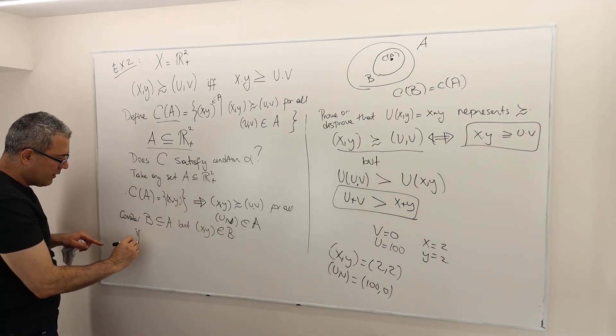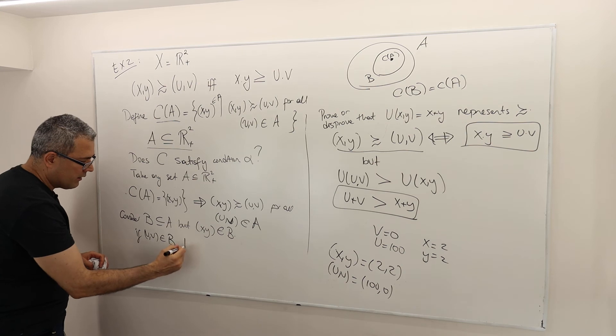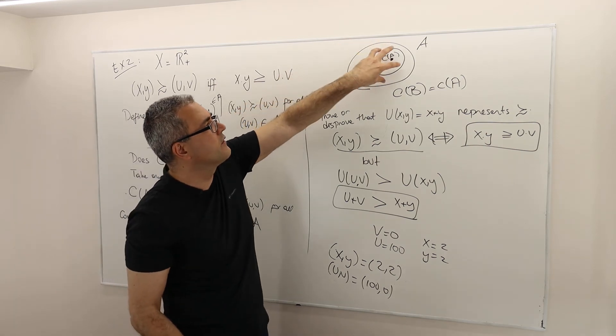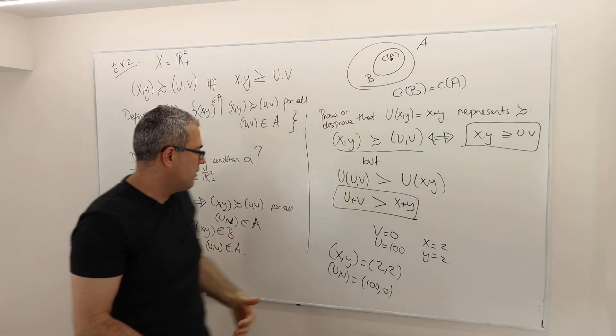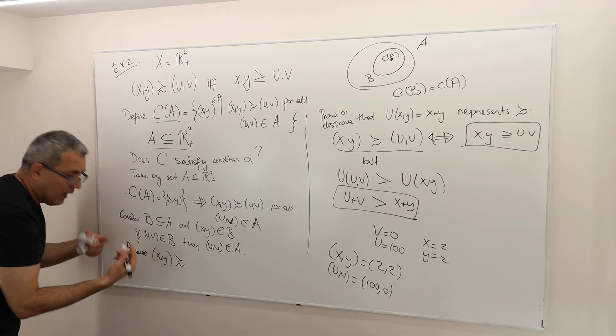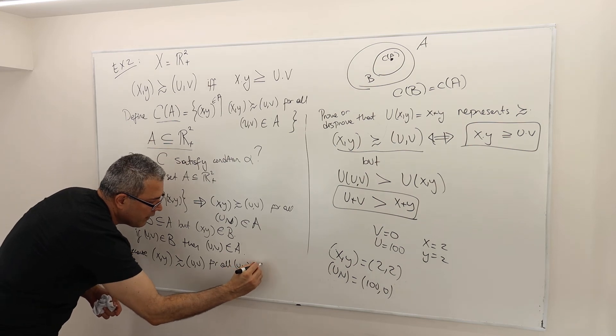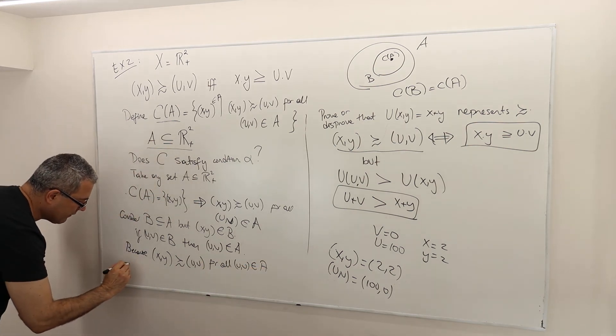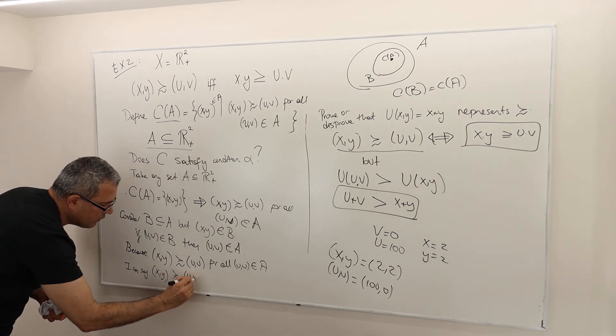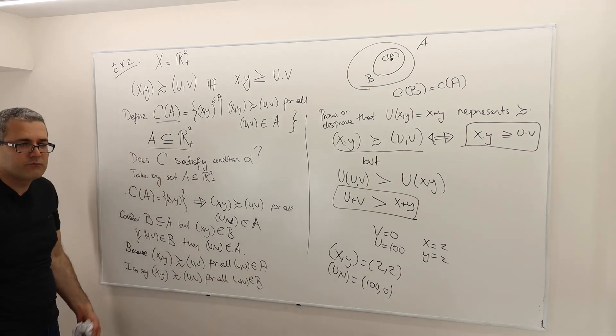Well, I know that if UV is in B, then UV is in A, right? I mean, if you are in this small set, you have to be in this larger set. Okay, well, because XY is at least as good as UV for all UV in A, I can say XY is at least as good as UV for all UV in B as well.